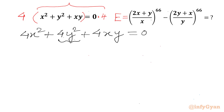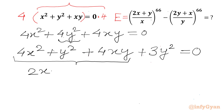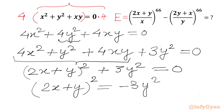Now we can split 4y squared: we write 4x squared, then y squared, and then the remaining 3y squared, along with the 4xy term. From the first three terms we get the perfect square of (2x + y), so we have (2x + y)² + 3y² = 0, or (2x + y)² = −3y². Let's call this equation 1.